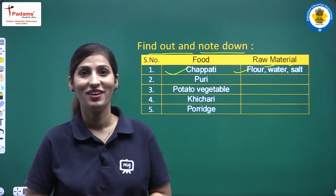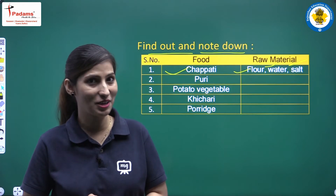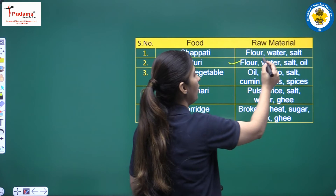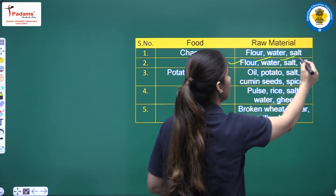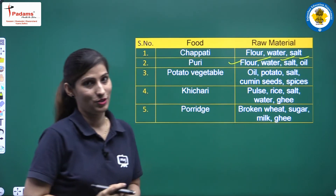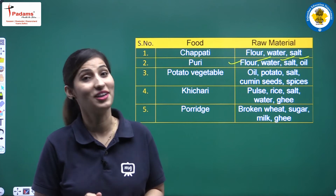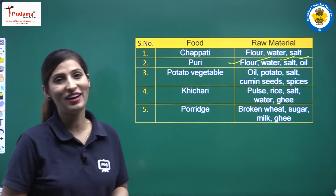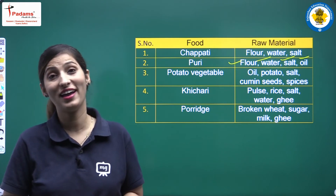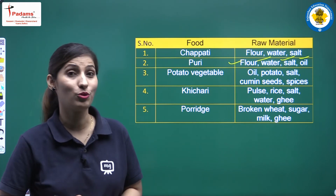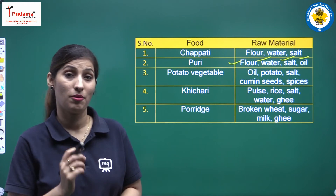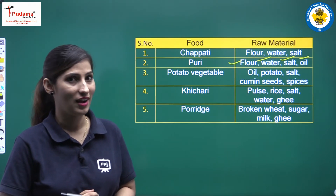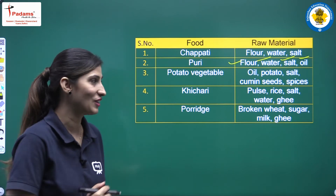For puri, what do we need? We need flour, water, salt, and oil. The water used must be clean — bilkul swach aur saaf paani hona chahiye — otherwise we will be sick.